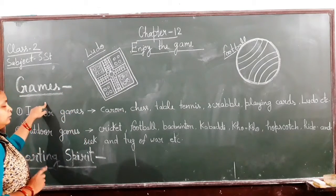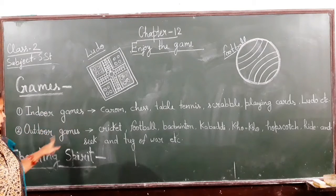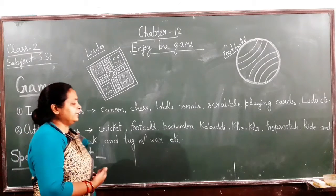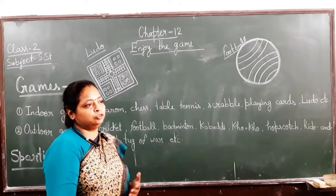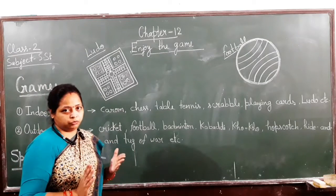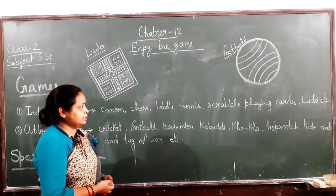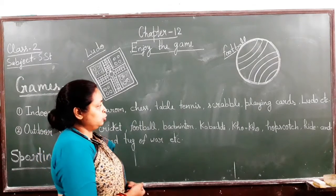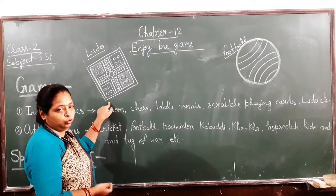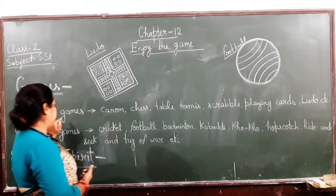Games are of two types: indoor games and outdoor games. In indoor games, there are many things we play in the house, in different rooms or spaces. Some people like to play games like Carrom, Chess, Table Tennis, Snap, Playing Cards, and Ludo. These are all called indoor games.